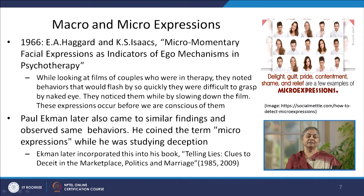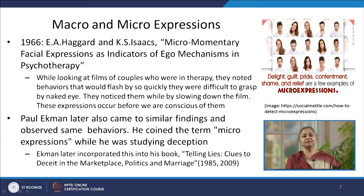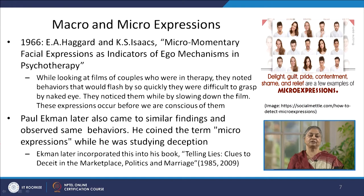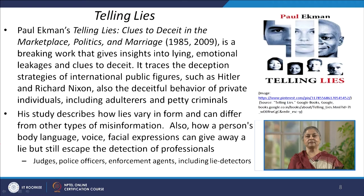Later, Paul Ekman in his independent research also came to similar findings and observed similar behaviors. While he was studying deception, he also became conscious of these micro expressions and coined the term. This term was incorporated in his book Telling Lies: Clues to Deceit in the Marketplace, Politics, and Marriage, which was initially published in 1985 with a revised version in 2009 that incorporated his findings about micro expressions. Paul Ekman's work is path-breaking and gives us insights into lying, emotional leakages, and clues to deceitful behavior.